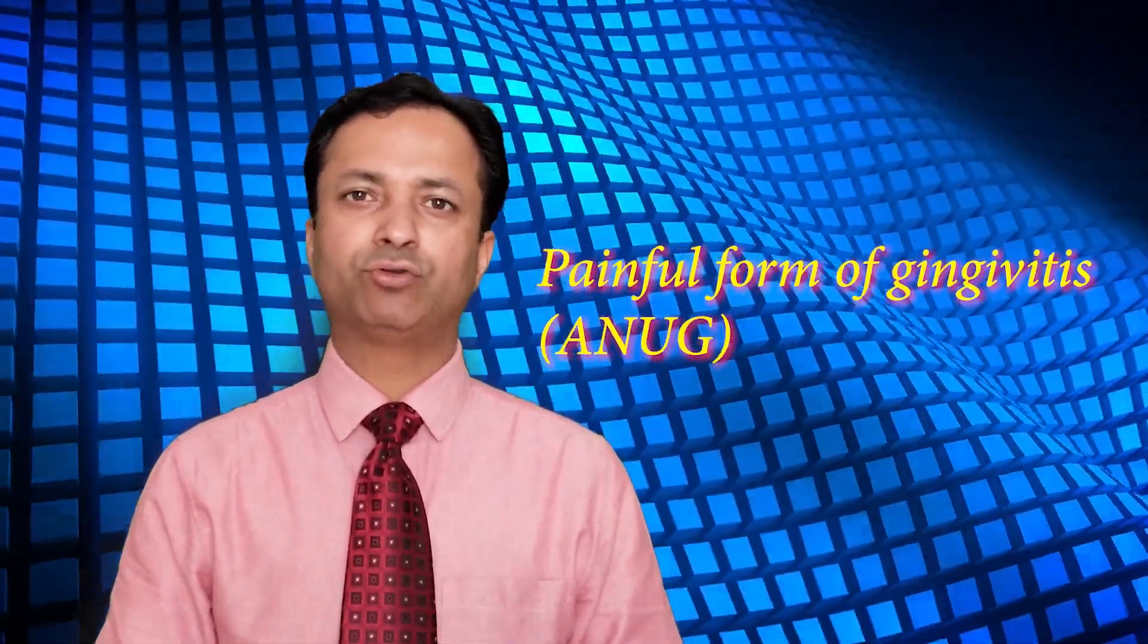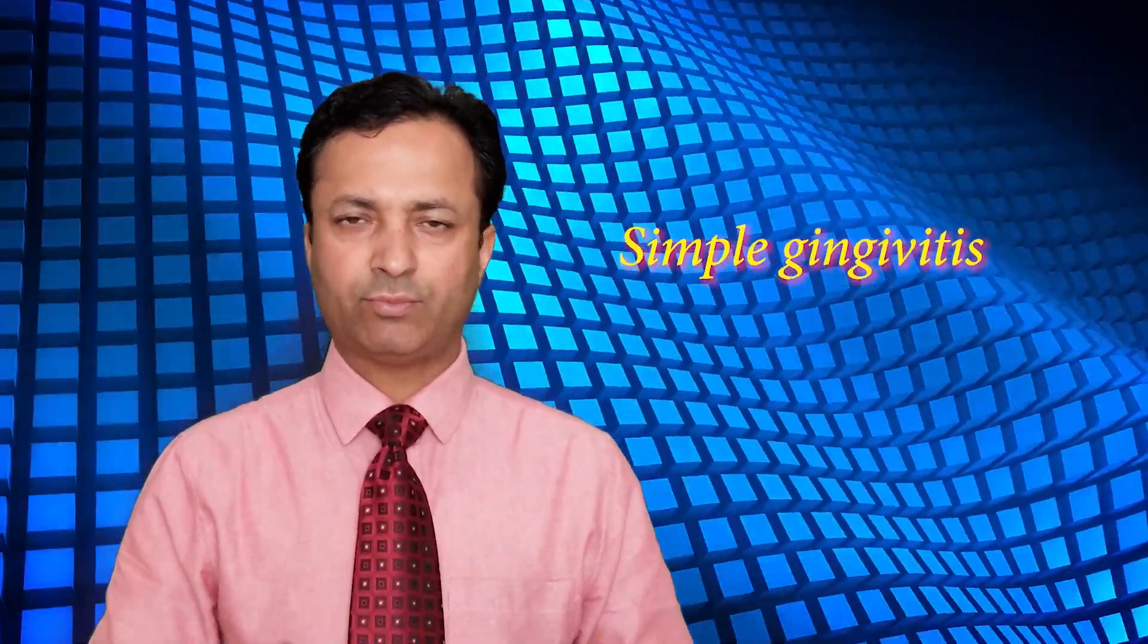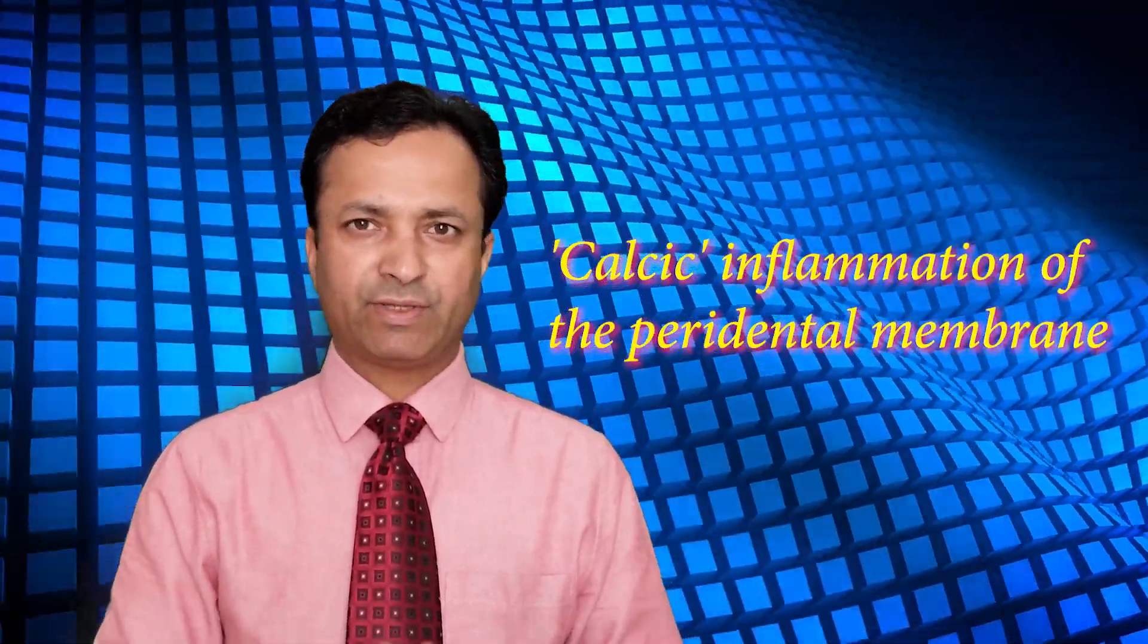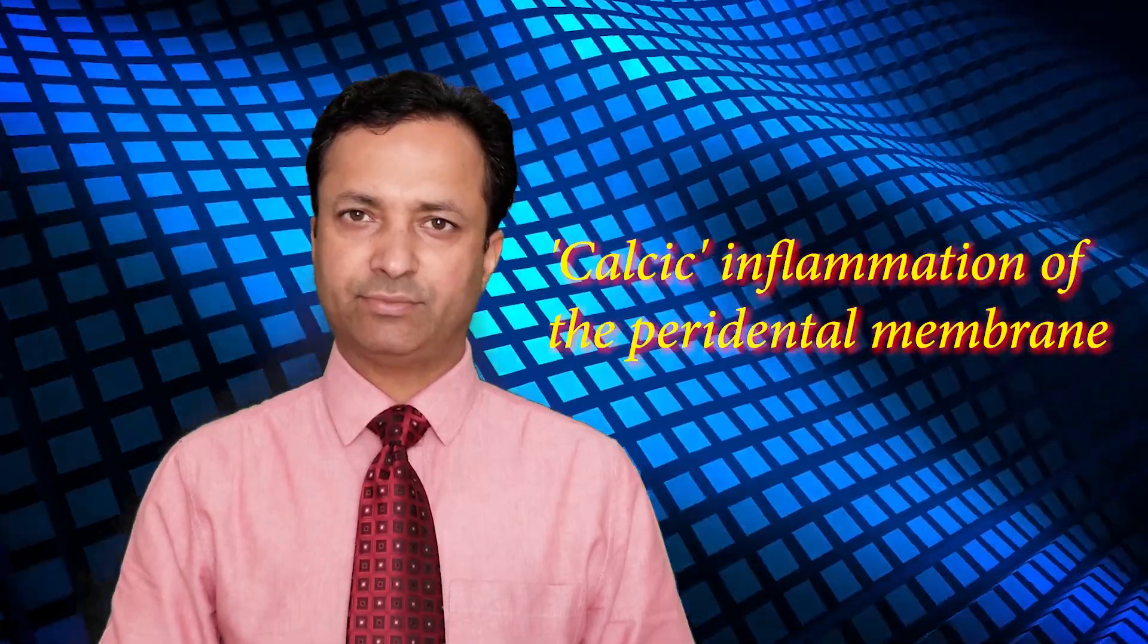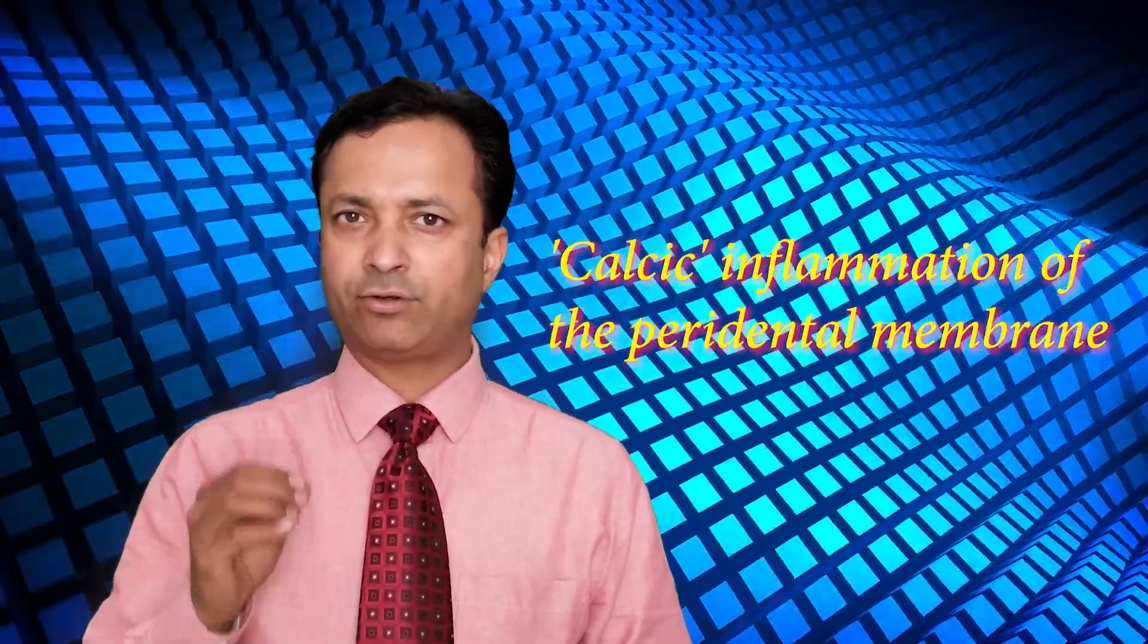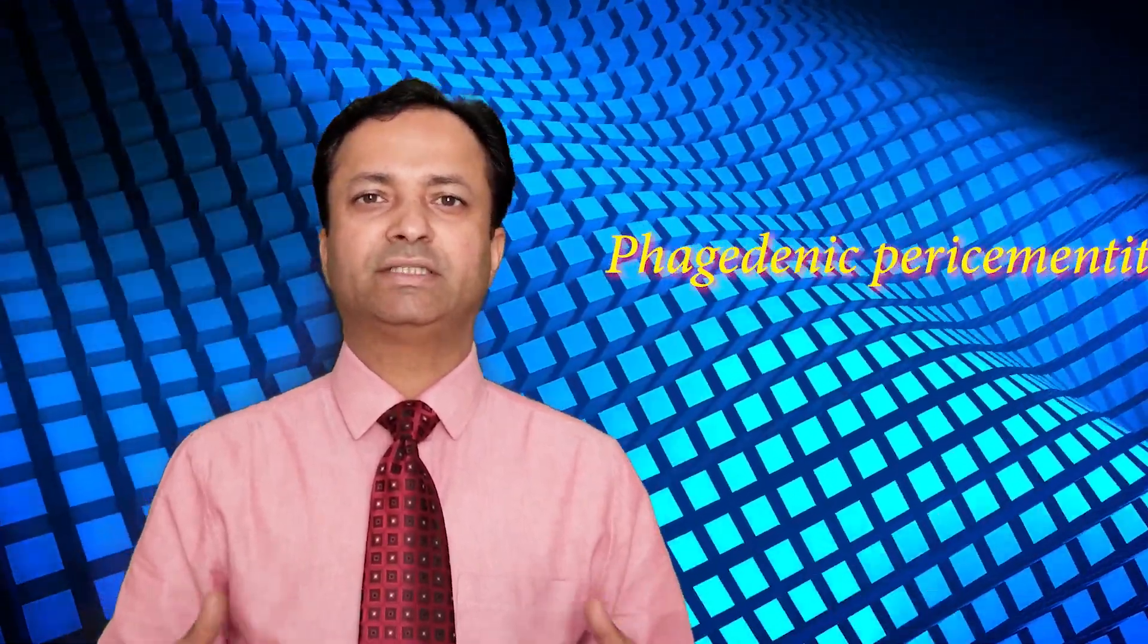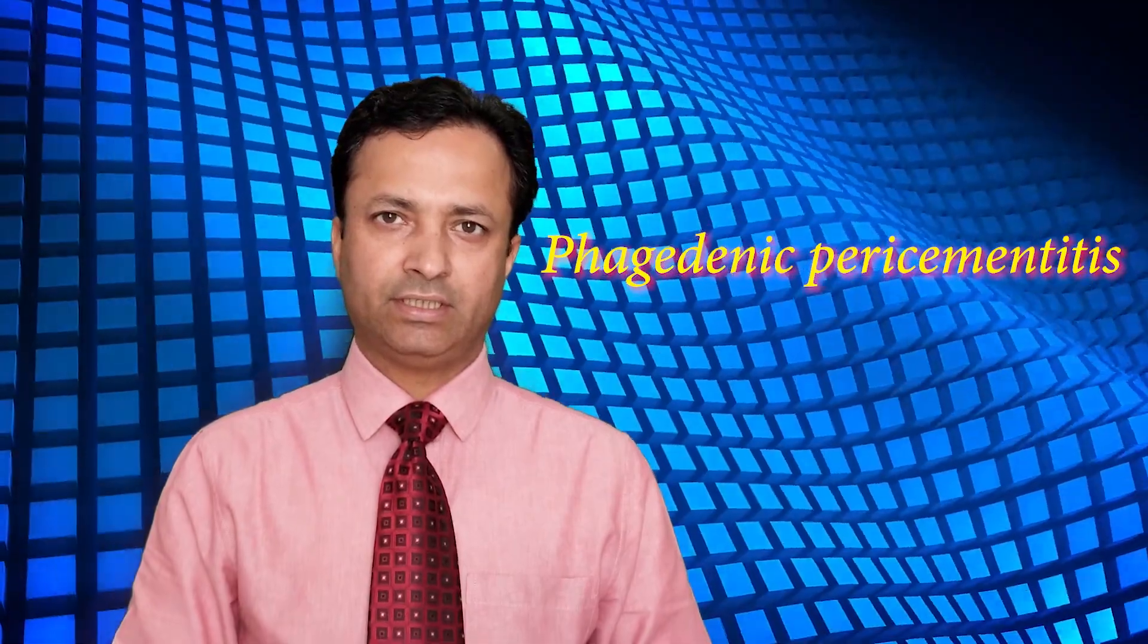The third category included simple gingivitis, which is common form of gingivitis caused due to presence of dental plaque. The fourth category included chronic inflammation of the periodontal membrane which is equivalent to chronic periodontitis or grade A grade B periodontitis in today's terminology, where the periodontal destruction commensurate with the presence of local factors. And the fifth category included phagedenic pericementitis which included those cases where there was aggressive periodontal destruction. The term is equivalent to grade C periodontitis or aggressive periodontitis in today's terminology.